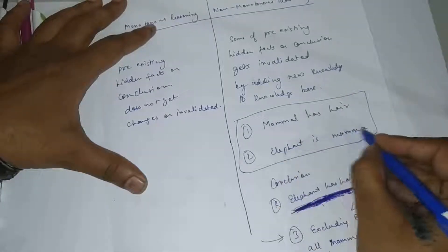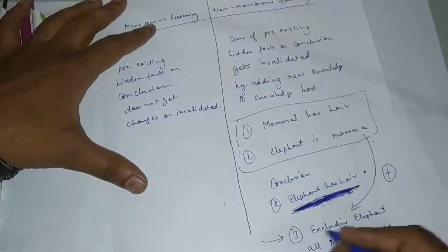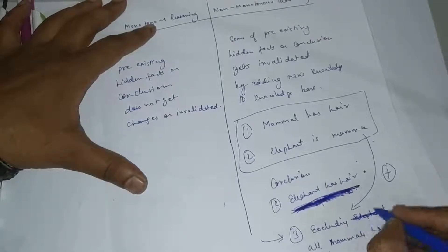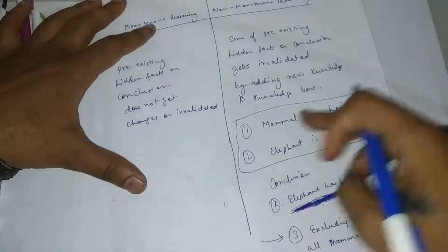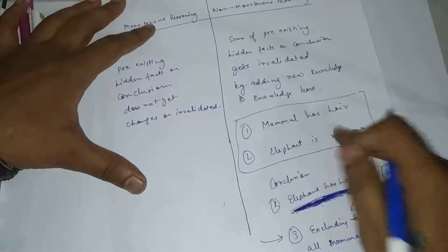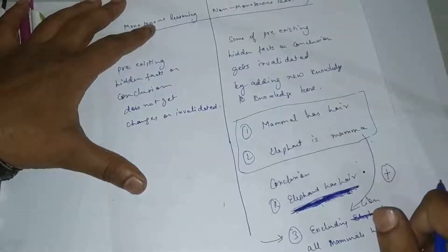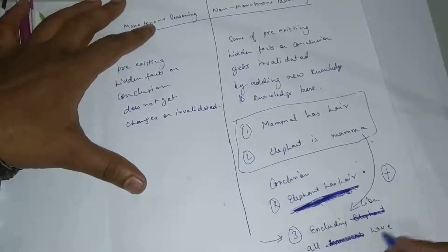If the new information doesn't affect the existing conclusions - if I talk about something else like other animals, then there is no invalidation.